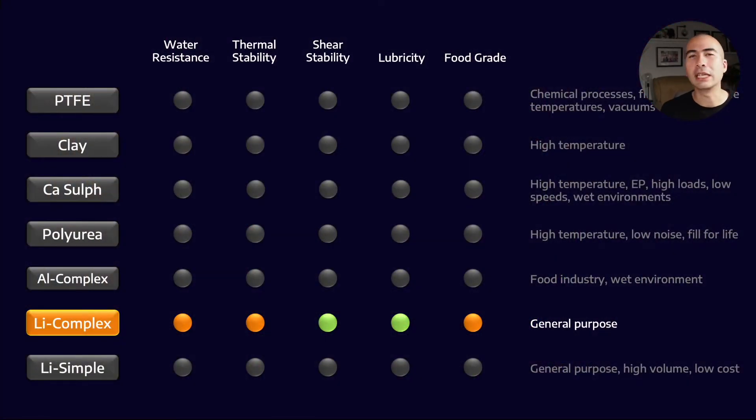Maybe you're already using a lithium complex grease, which is pretty good at high temperatures, but you want to move to something like a calcium sulfonate. Now, what you need to do is you need to change greases, you need to move from a lithium complex to a calcium sulfonate. But here we run into a problem, because maybe we don't have an opportunity to shut down the machine.